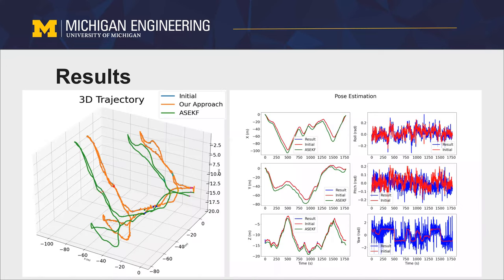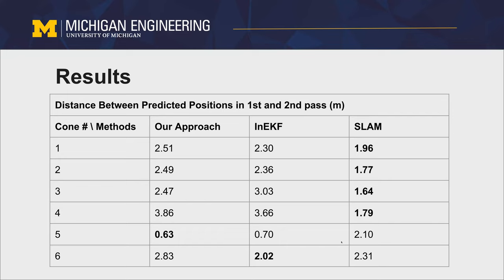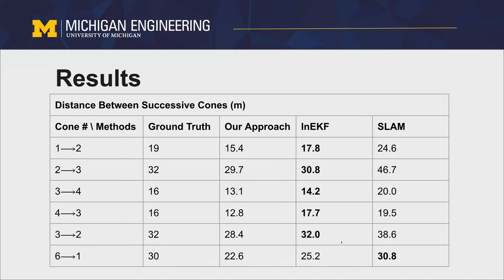So here's our 3D and marginal plots of our trajectory, which are similar in shape to the other methods. And our first metric will be the distances between the predicted positions among the two paths. So we have outperformed the other approaches on cone 5, and we have similar results for the other cones. So for the second measure, we have the distances between successive cones, which we have also results that are on par with the other approaches.